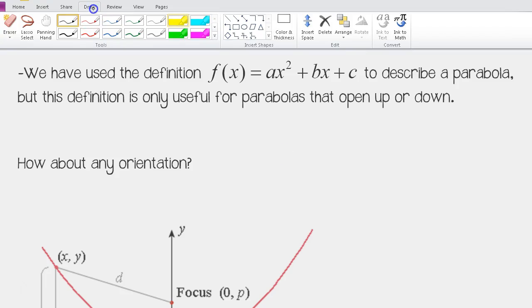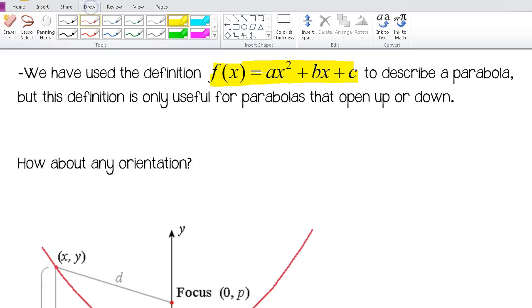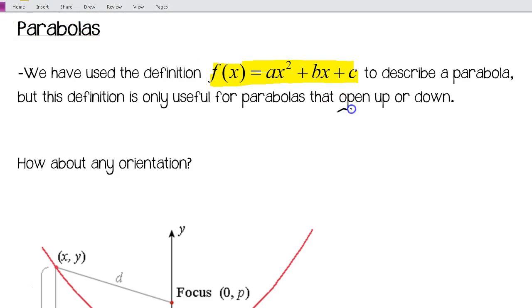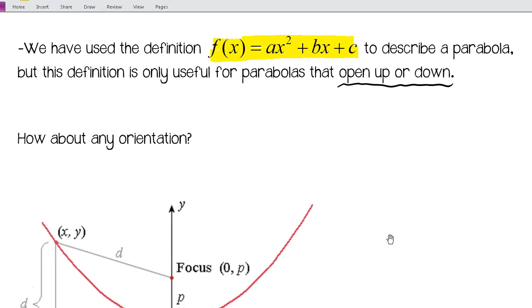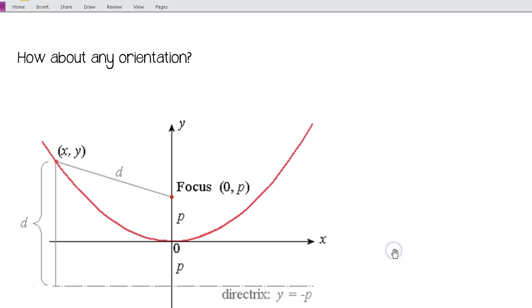In previous math classes, we've looked at this equation for a quadratic: f of x equals ax squared plus bx plus c, which describes a parabola. But this definition really is only useful for parabolas that open either up or down. We need to take into account any orientation, because parabolas can open left and right as well.